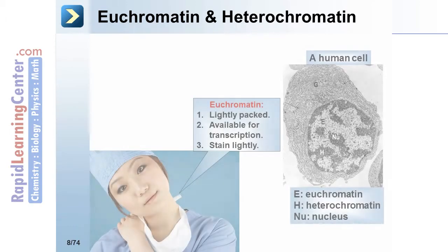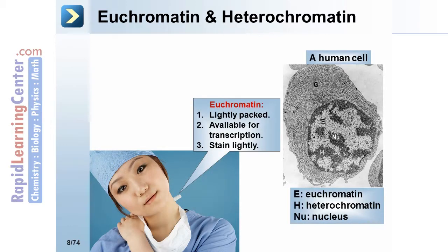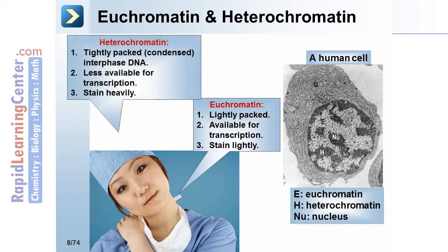Euchromatin and heterochromatin: euchromatin is lightly packed, available for transcription, and stains lightly — it is designated with an 'E' in this cell. Heterochromatin is tightly packed, condensed interphase DNA, less available for transcription, and stains heavily — it is designated with an 'H' in this image.